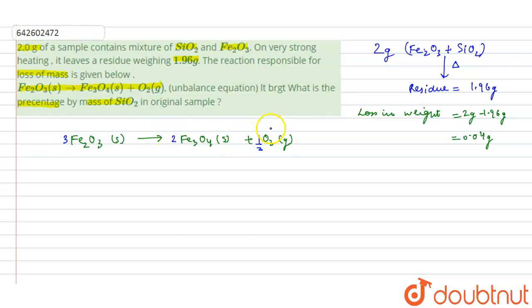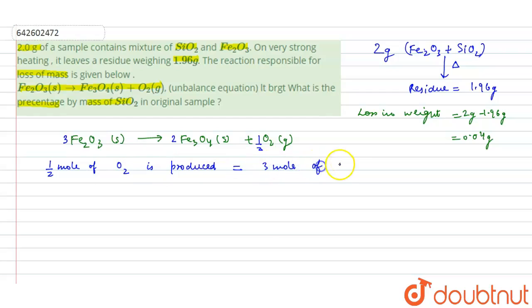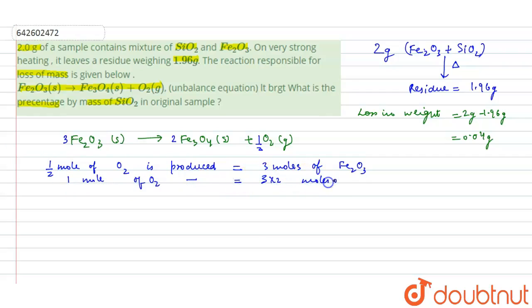By balancing the reaction: half a mole of oxygen is produced by 3 moles of Fe2O3. Therefore, 1 mole of oxygen is produced by 3 × 2 = 6 moles of Fe2O3.